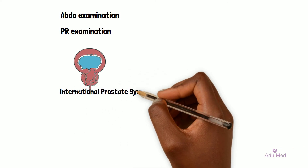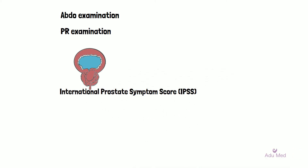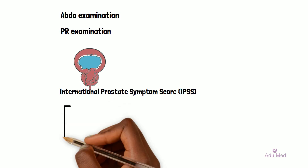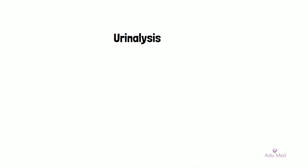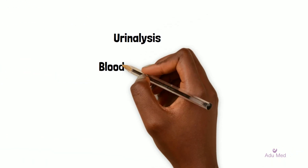The IPSS score can be used — this is a validated symptom score recommended by NICE to allow for assessment of symptom severity. NICE also recommends the use of a urine frequency volume chart, which helps to distinguish between frequency, polyuria and nocturia.